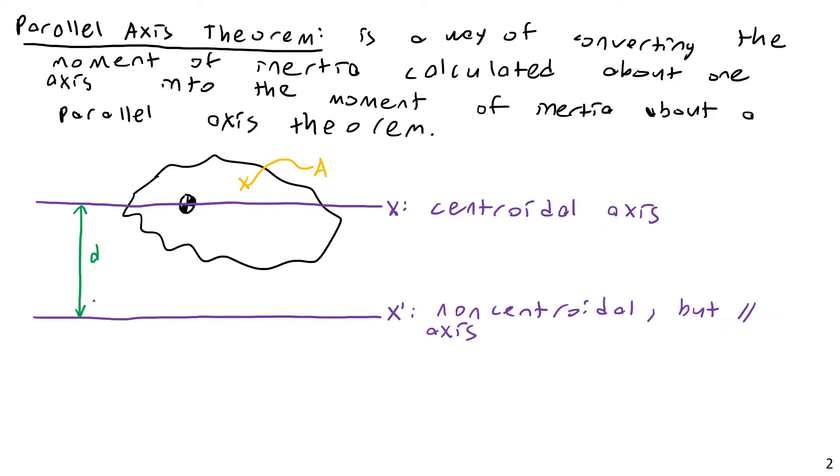Then I will simply say that Ix prime, that would be the moment of inertia about the non-centroidal axis, is equal to Ix, the moment of inertia about the centroidal axis, plus A d squared. This term here, this A d squared, is what allows you to shift from one axis to another. So notice here that this is going to be an addition. And also notice, consider this in terms of signs.